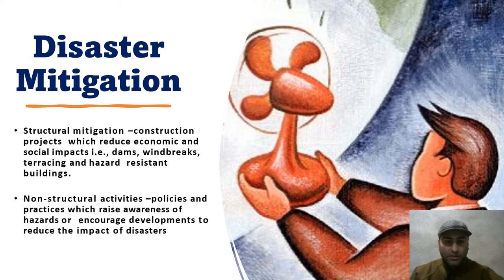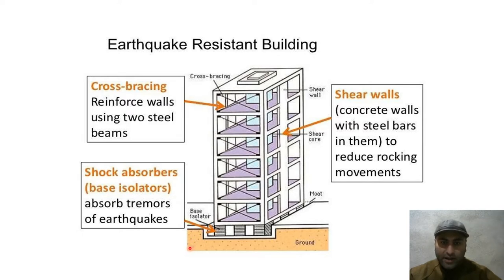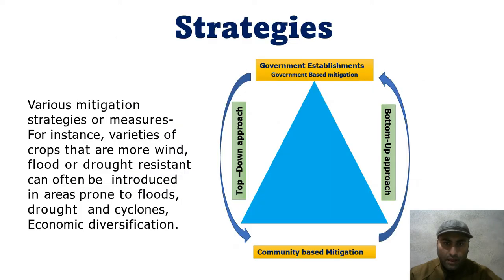Non-structural measures encourage development that reduces disaster impact through policy interventions. For structural measures in earthquake-resistant buildings, for example, we use diagonal crossing of steel, install shock absorbers, and use shear walls — concrete walls with steel bars — to reduce the impact of shocks created by earthquakes.